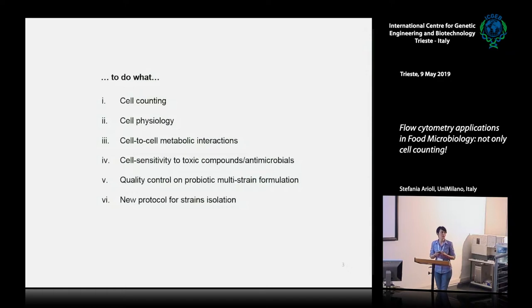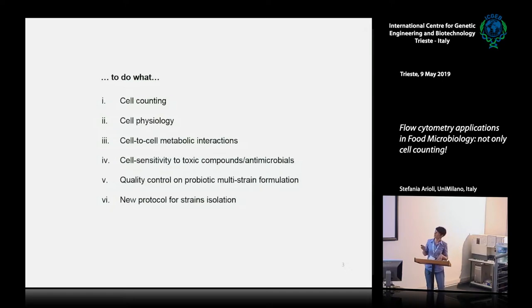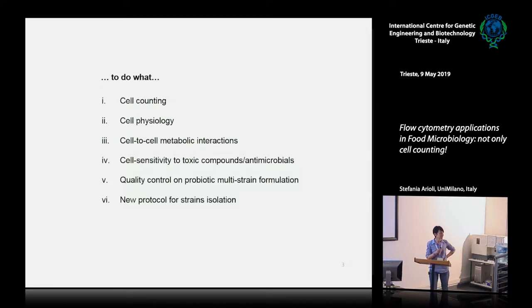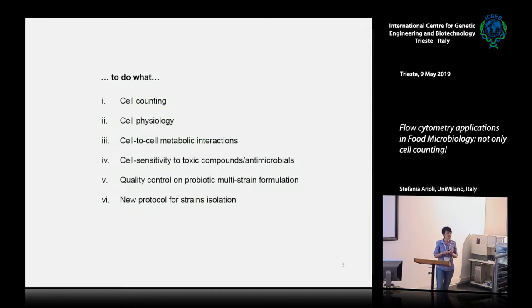I'm here to talk about our applications in food microbiology and why we use flow cytometry. For example, for cell counting and to assess the viability of a bacterial sample; to study cell physiology and cell-to-cell metabolic interactions; to assess the sensitivity of bacteria to toxic compounds or new antimicrobials; to check the quality of probiotic formulations; and finally, to set up new protocols for new strain isolation.